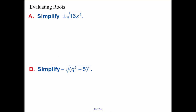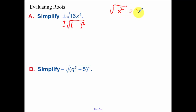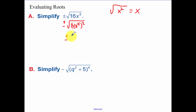Simplifying each expression using square roots. Think about writing the expression inside as something to the 2nd power, because the square root of x squared will simplify to x. So for the square root of 16x to the 8th: 16 is 4 squared and x to the 8th is (x to the 4th) squared — multiply 2 times 4. The square root and the squared cancel, so we get 4x to the 4th.